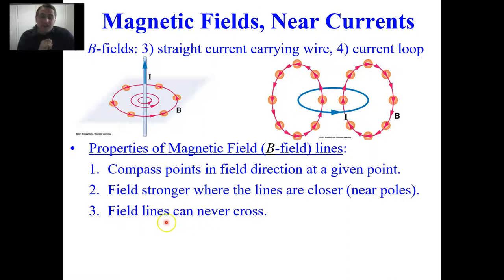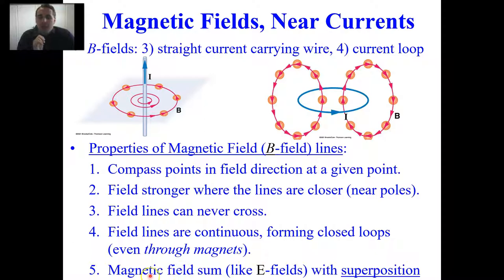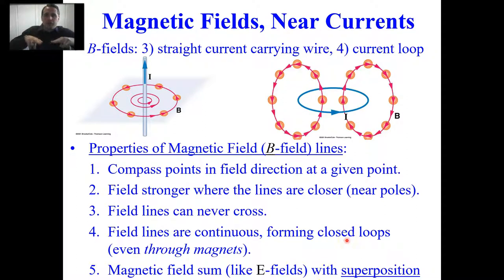Magnetic field lines, just like electric field lines, can never cross one another. The field lines are continuous, forming closed loops even through permanent magnets themselves. Magnetic field lines can also add together just like electric fields do — you can sum them via superposition. If you have multiple bar magnets near each other, you can get a stronger magnetic field if the magnetic fields are aligned.